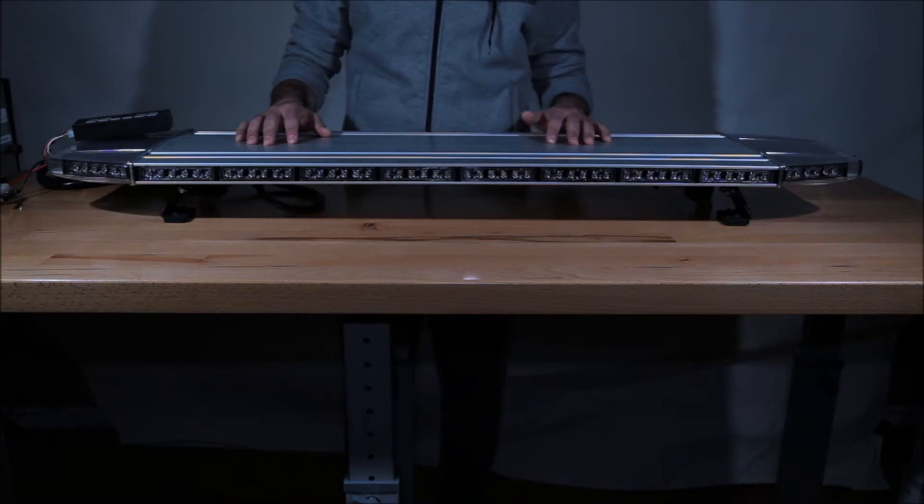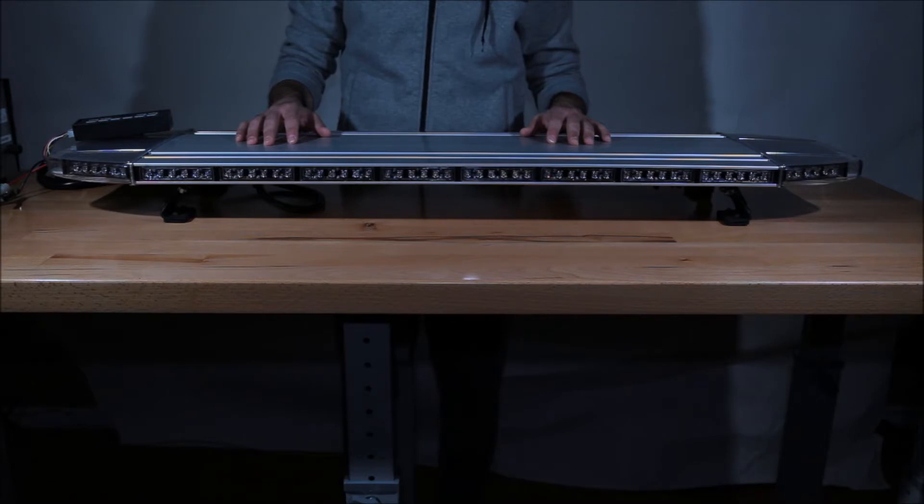This light bar comes in multiple sizes ranging from 18 to 63 inches. We also offer this in a tow truck light bar series adding stop and turn lights.